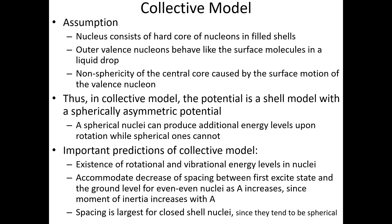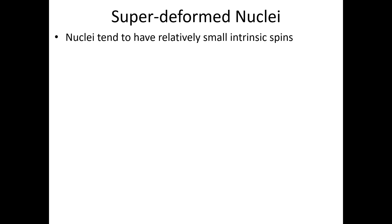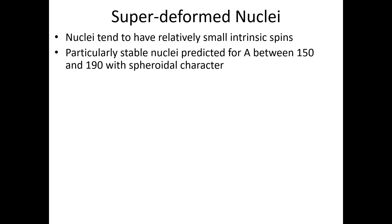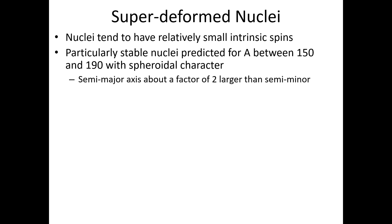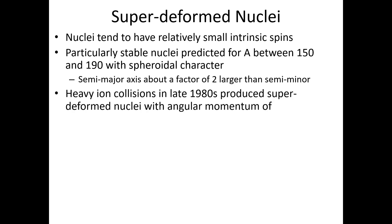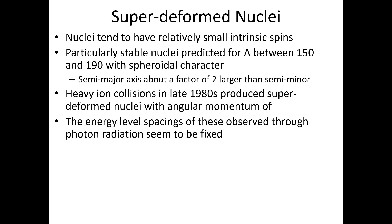The spacing is largest for closed shell nuclei since they tend to be spherical. The model also discusses super-deformed nuclei — nuclei that tend to have relatively small intrinsic spin. Particularly stable nuclei are predicted for atomic mass between 150 and 190 with non-spherical shapes, where the semi-major axis is about a factor of two larger than the semi-minor axis. Heavy ion collisions in the late 1980s produced super-deformed nuclei with high angular momentum, and energy level spacing was observed through gamma radiation.